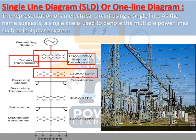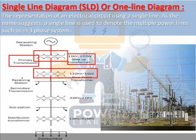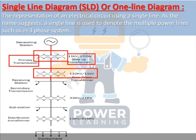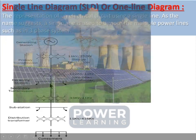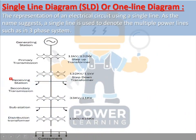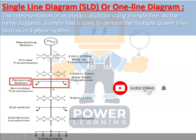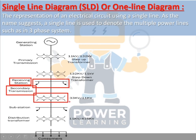The line from the step-down transformer connects to a receiving station, which is a separate part. This transformer steps down 132 kV to 11 kV, and the stepped-down power is received at the receiving station. You can explain this easily to another engineer using single line diagrams with standard symbols.